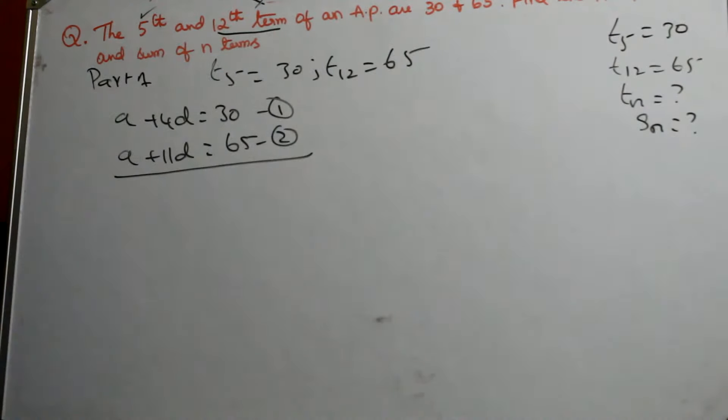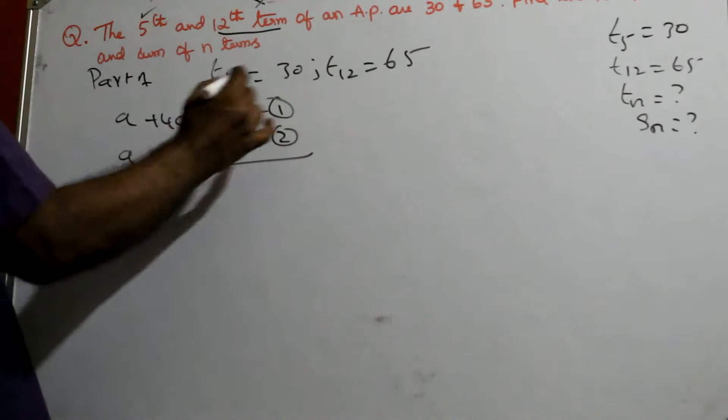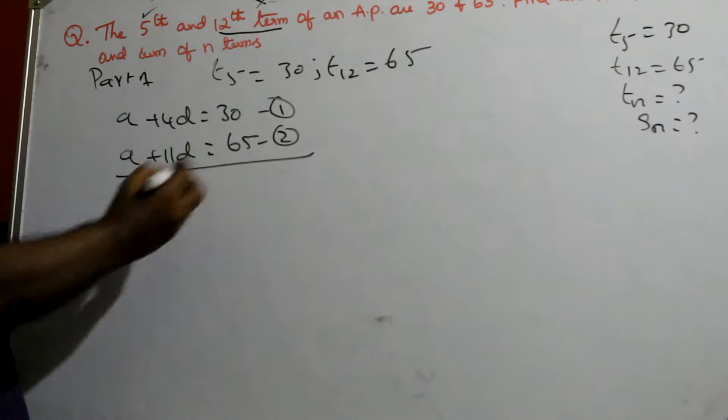If you regularly work out the videos which you have taught, you are going to understand this well. Don't go directly to a particular video. So T5 means A plus 4d. T12 is A plus 11d.